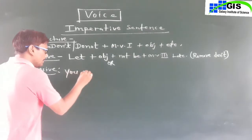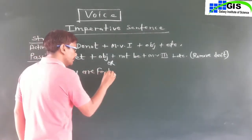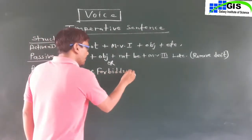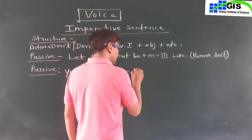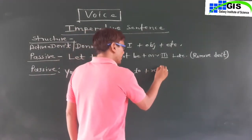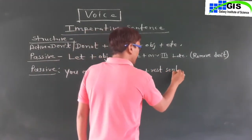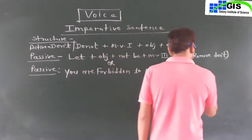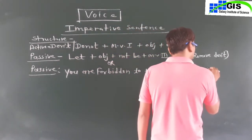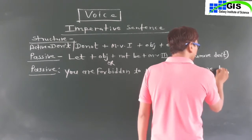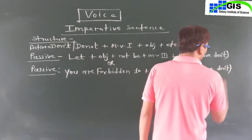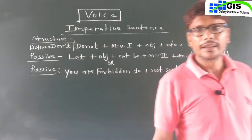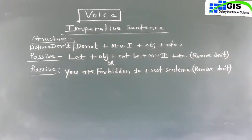There are two rules to transform active voice into passive voice for negative imperative sentences. The second rule is: 'You are forbidden to + rest of the sentence.' Remove 'don't' from the active voice sentence. You have to copy the sentences or the structure of active voice and passive voice from the blackboard.